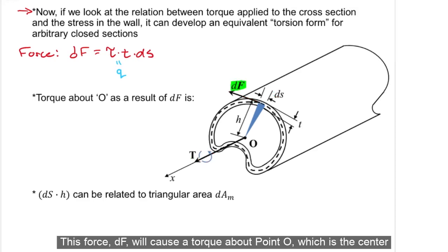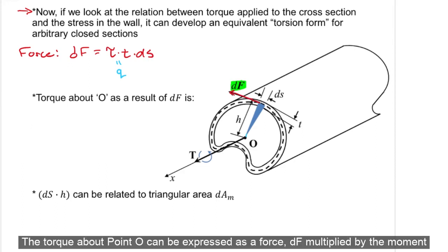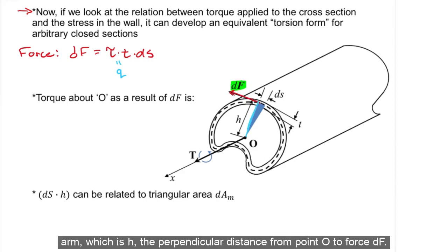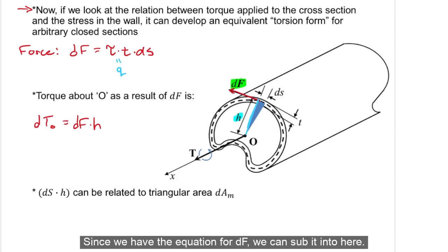This force, dF, will cause a torque about point O, which is the center of the tube, and we'll call it DTO. The torque about point O can be expressed as the force, dF, multiplied by the moment arm, which is H, the perpendicular distance from point O to force dF. Since we have the equation for dF, we can sub it into here.